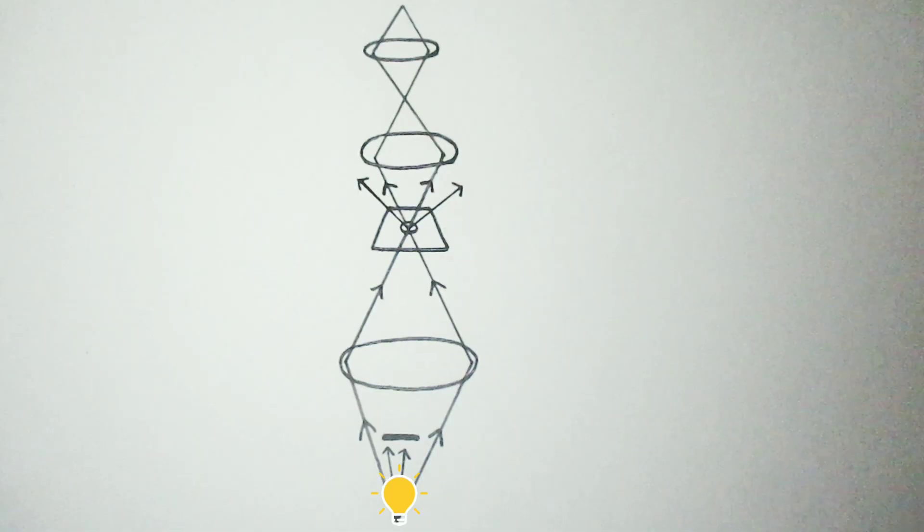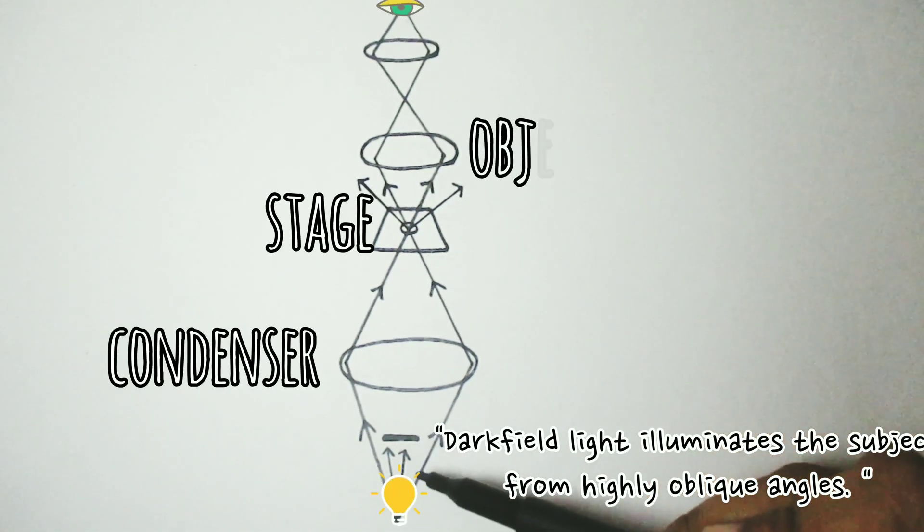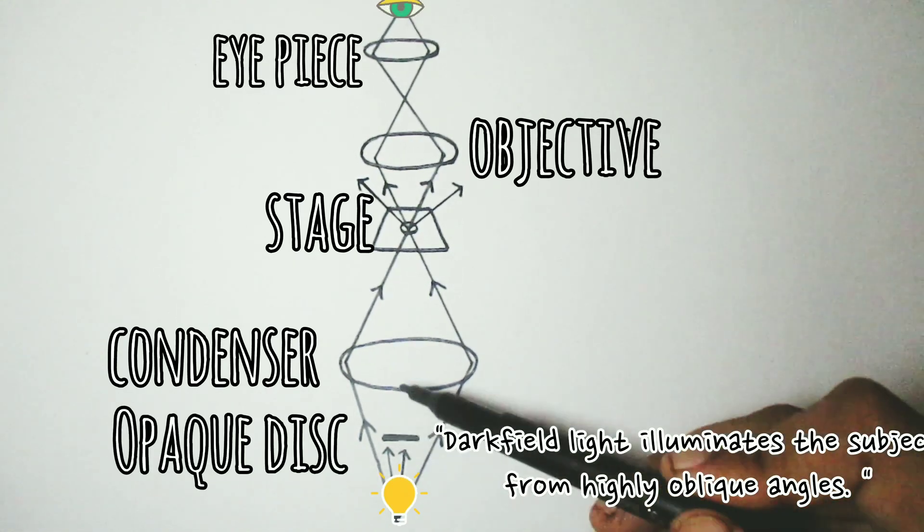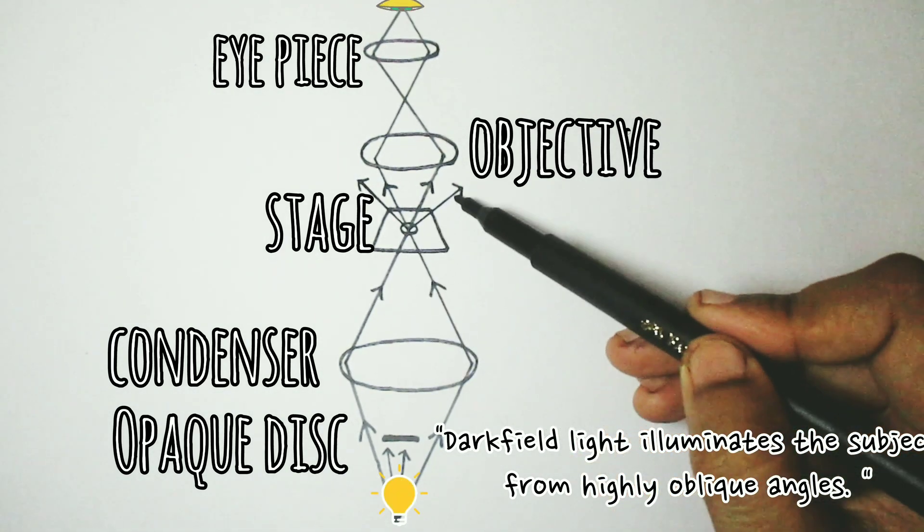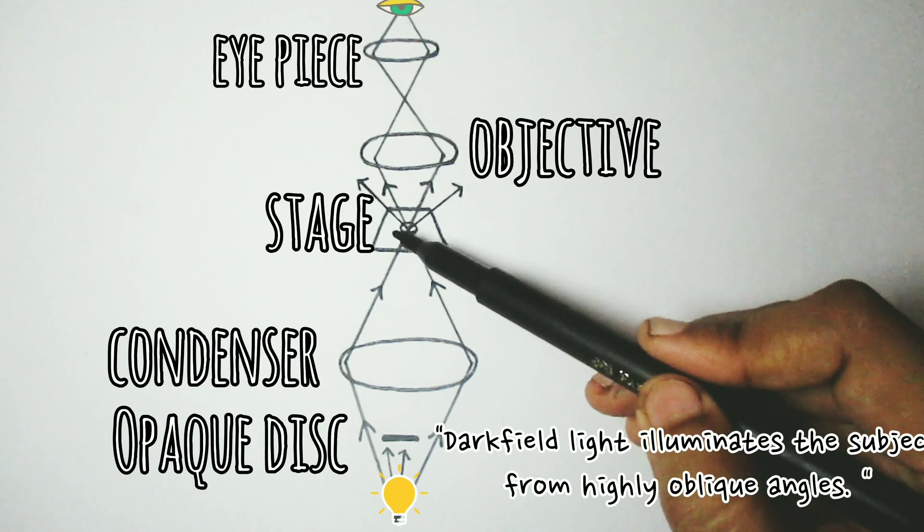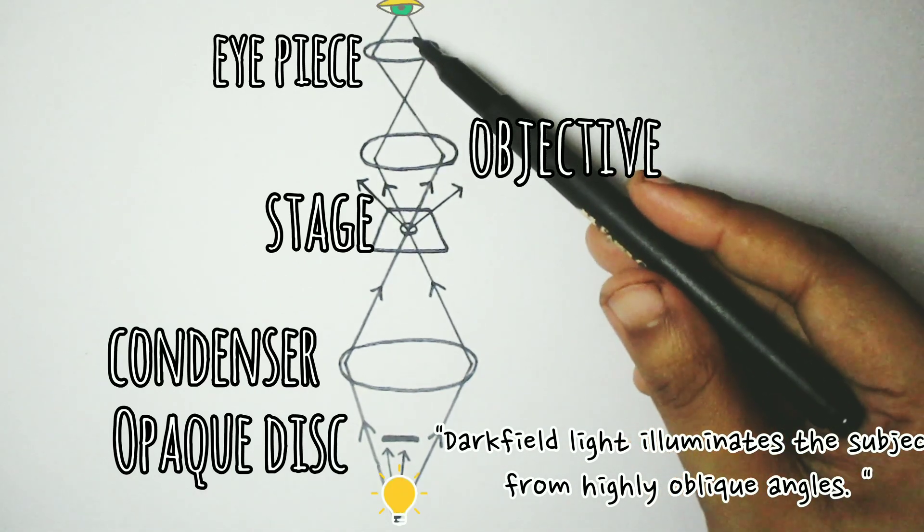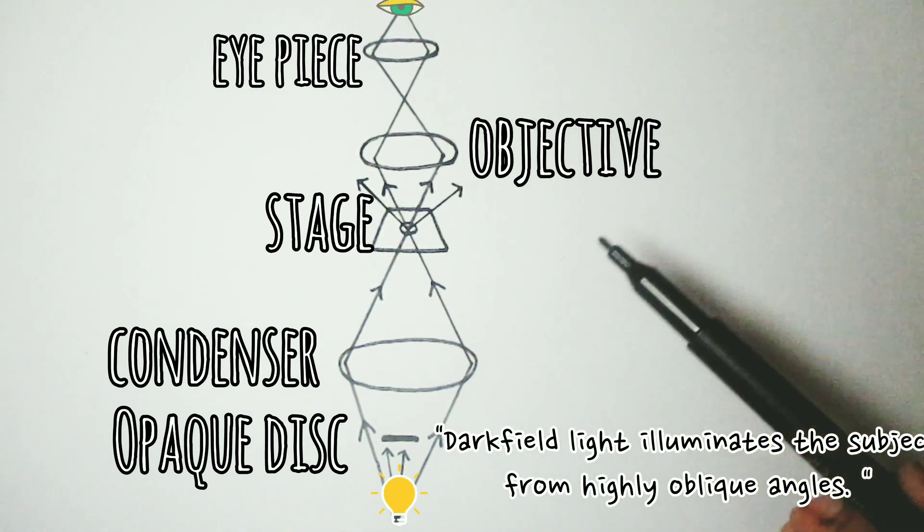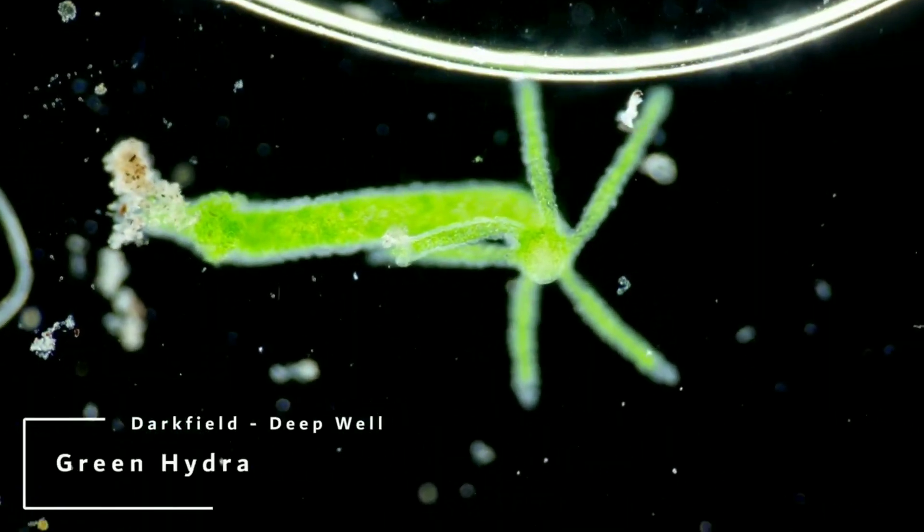So how does it achieve this? The condensing system for dark field illumination utilizes a central circular disk stop, an opaque disk that prevents direct condenser rays from entering the objective lens. Only those rays that have been suitably scattered by the object enter the objective lens to generate the final image. Let's look into Diatom's work with dark field microscope.